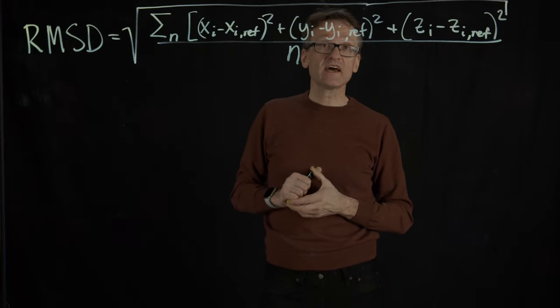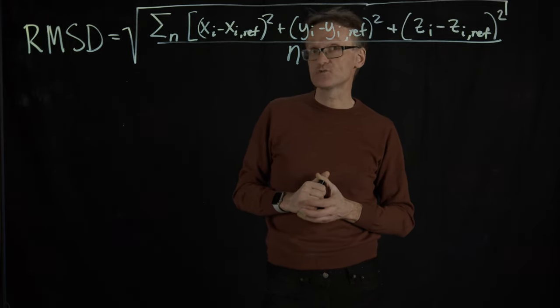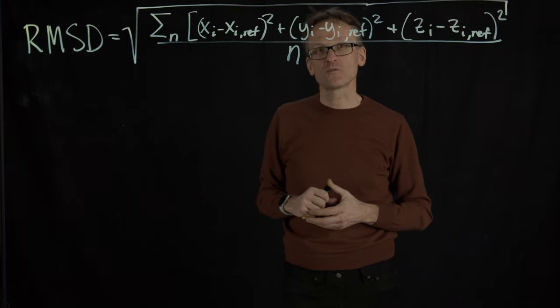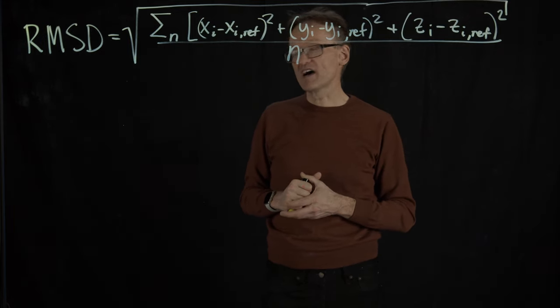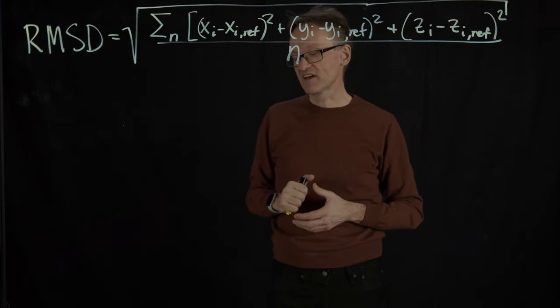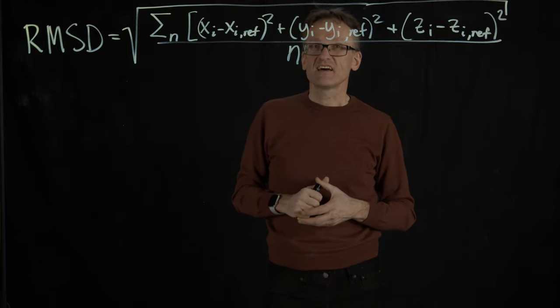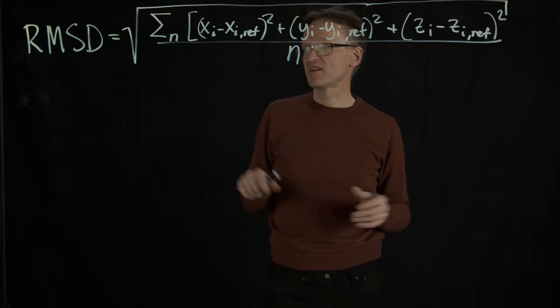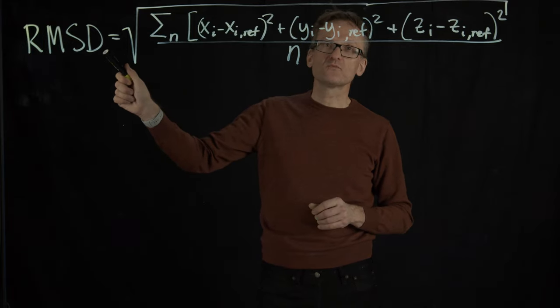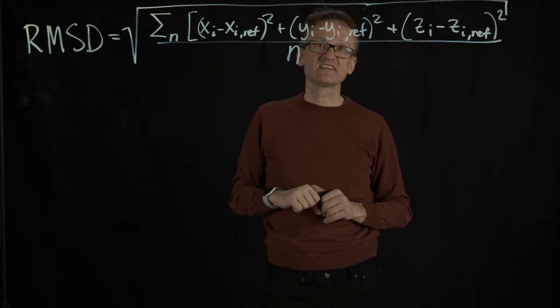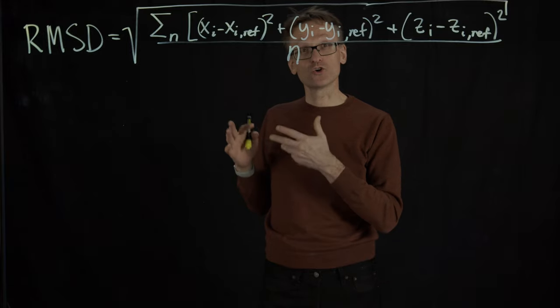If it's two or three angstroms, it's a pretty good structure, quite usable. At three, pharmaceutical companies will start complaining. At five, all bets are not quite off and it's bad. And at six or seven you don't have any similarity at all. So when we talk about models we're somehow going to relate this to RMSD and say how good they are.